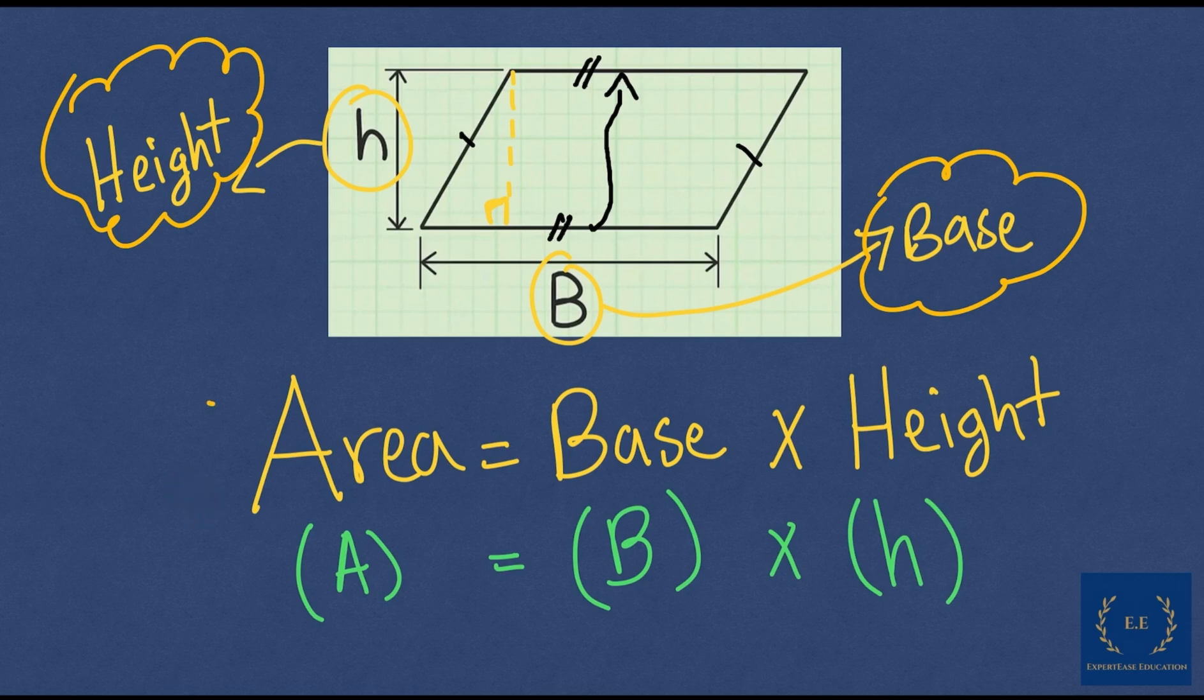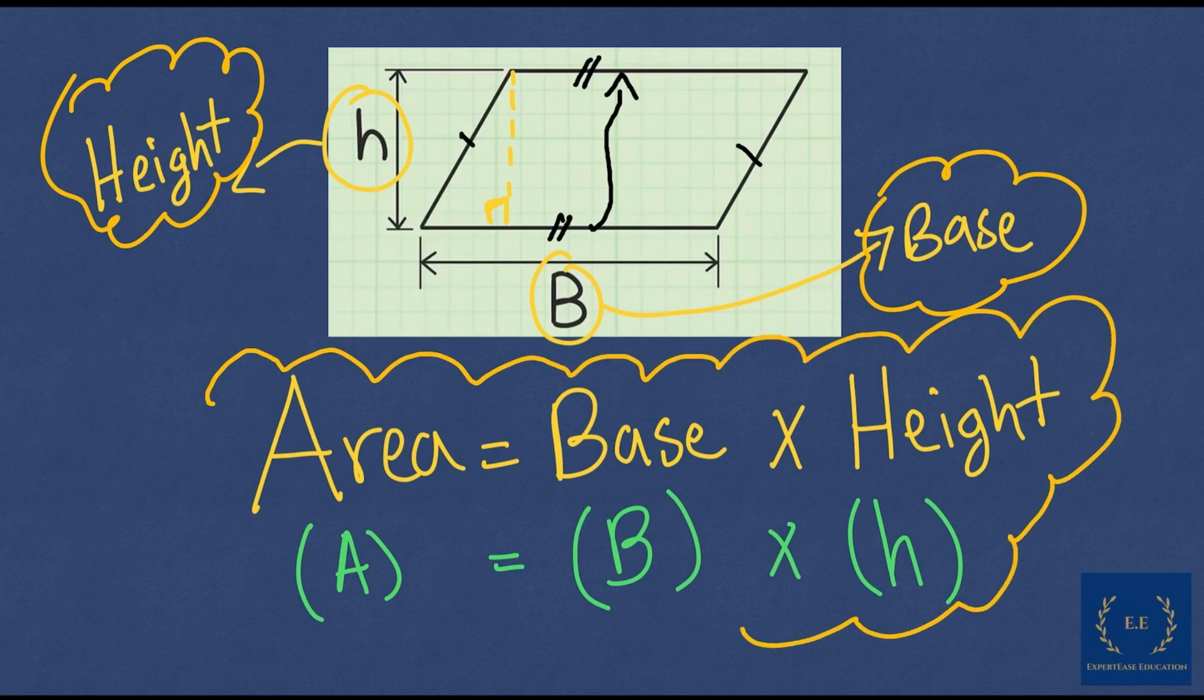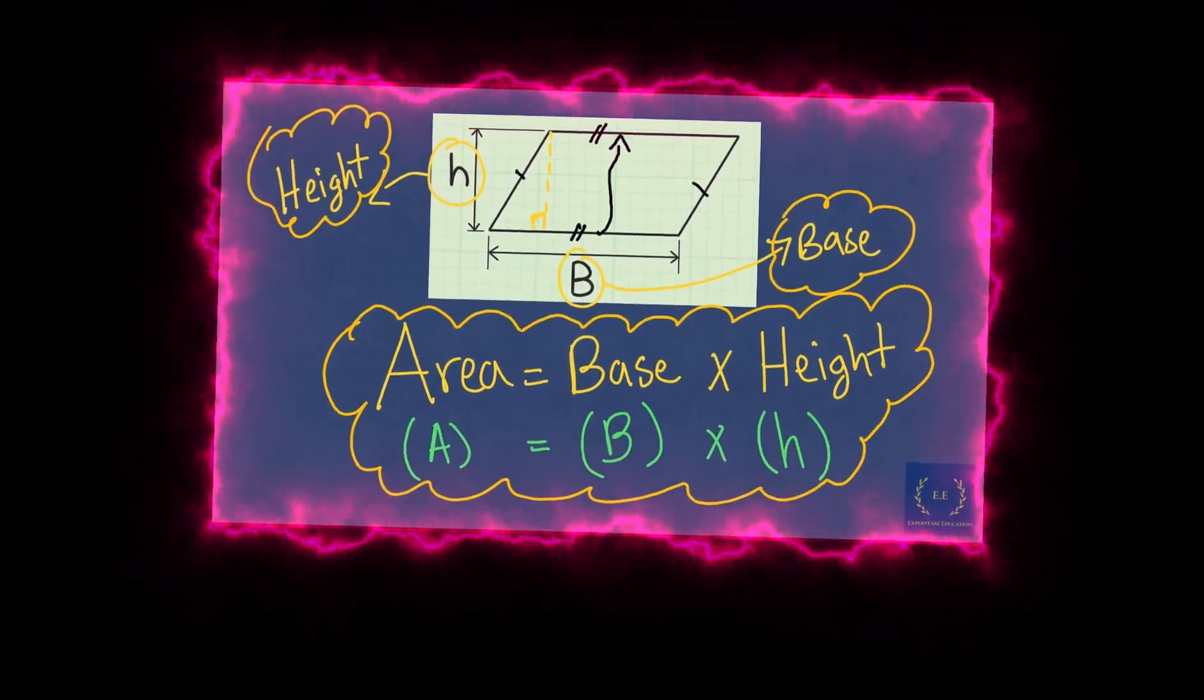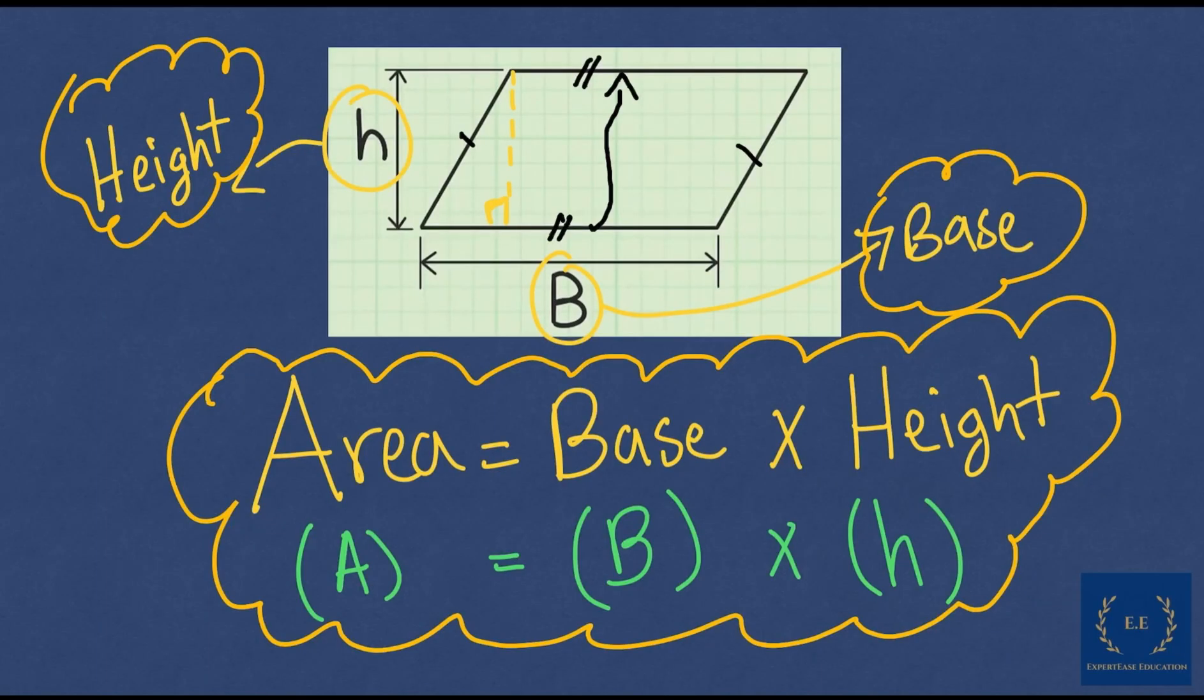The formula for calculation of the area of a parallelogram is as follows: the area of a parallelogram equals the base multiplied by the height, where we are going to give the area a letter A, the base a letter B, and the height a letter H. This is the formula you need to memorize.